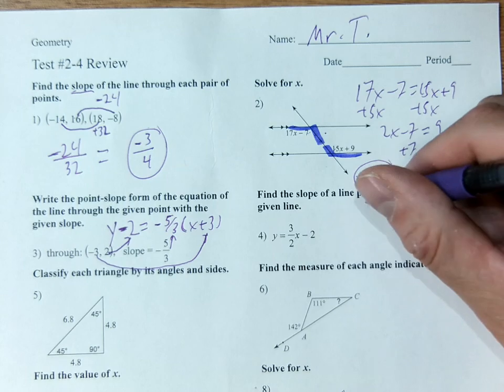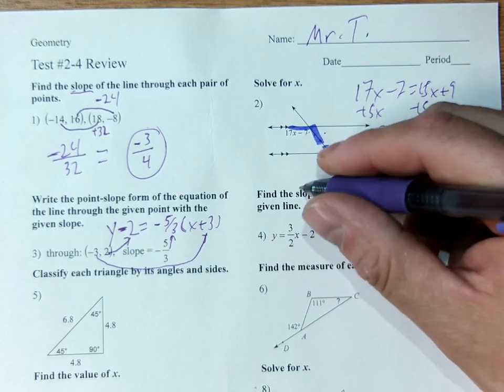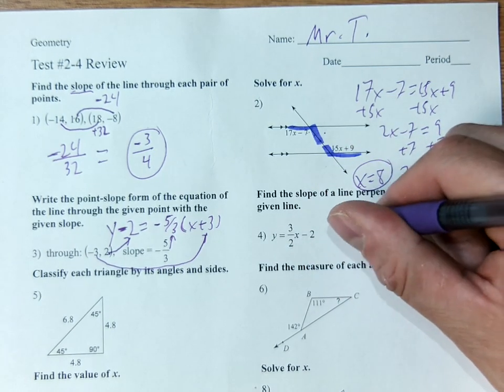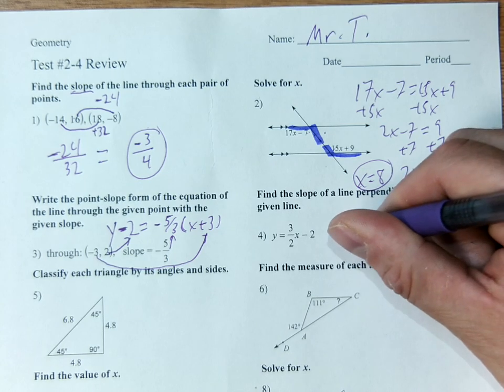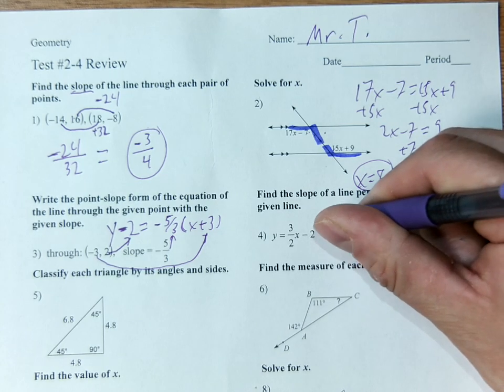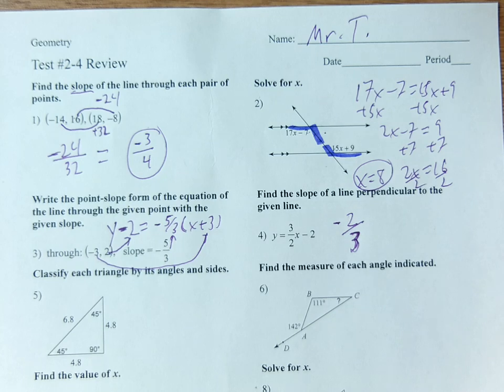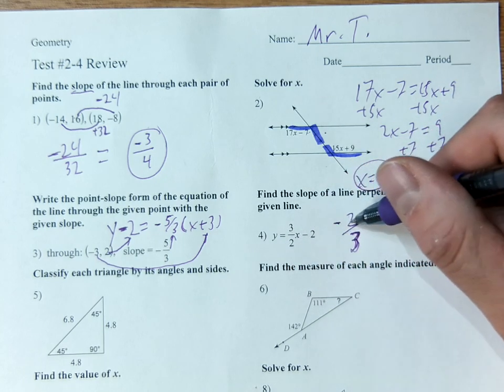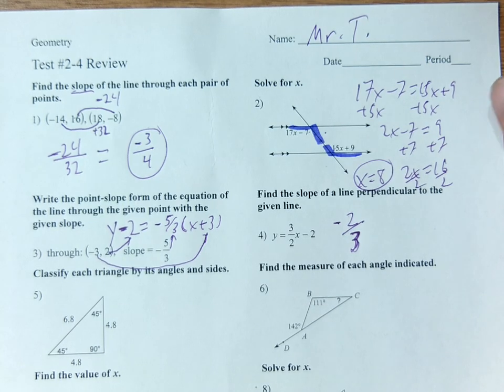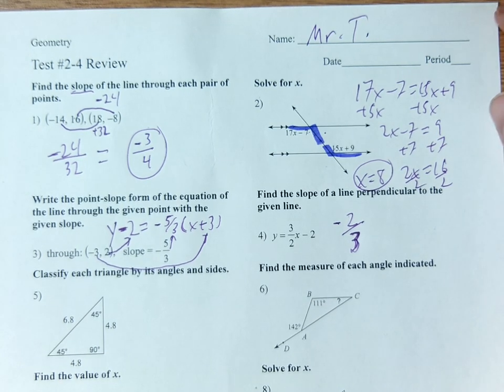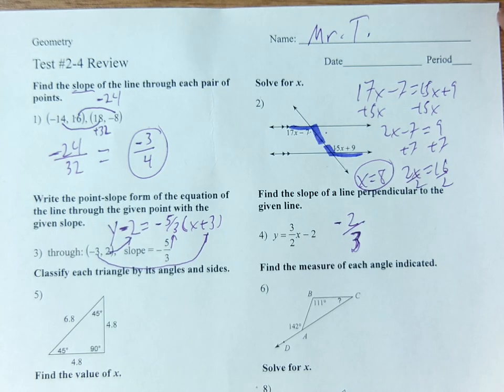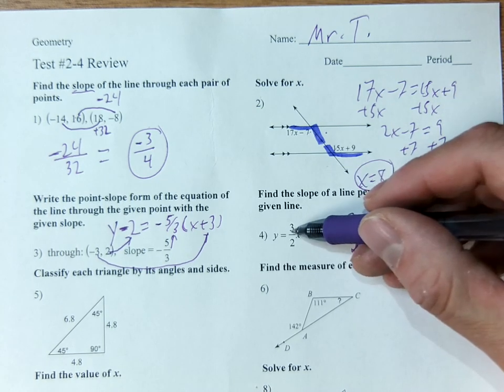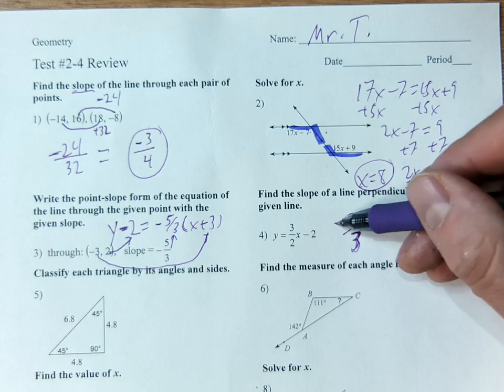Perpendicular definition again. Flipped and negated. Some of you keep getting this wrong. You've got to do both. Reciprocal, negative, opposite reciprocal. If it was a negative 3 halves it would be positive 2 thirds. It's the opposite reciprocal of what this one is. Flip it, change the sign.